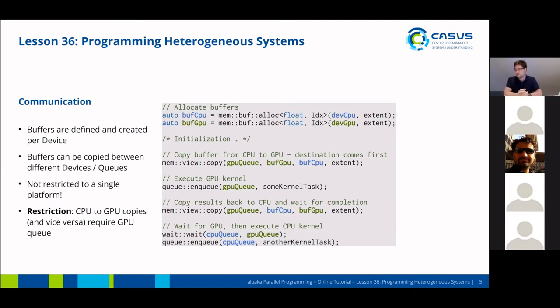There is one restriction here: CPU to GPU copies and vice versa require the GPU queue. So you can copy from the CPU to a GPU on a CPU queue.